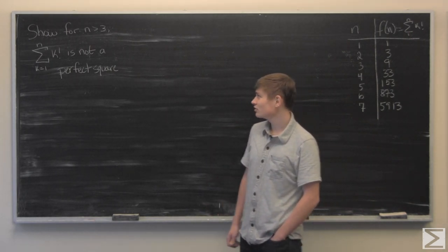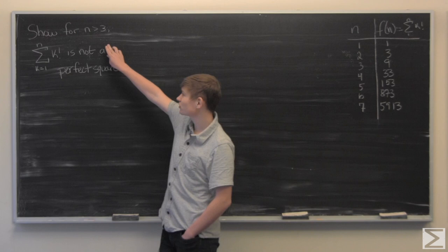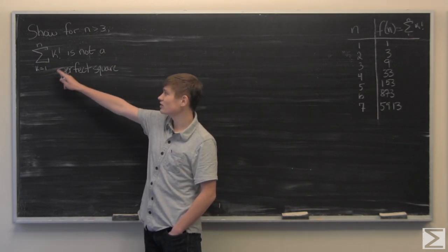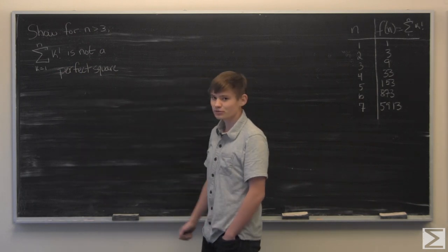This week's problem was to show that for n greater than 3 the sum from 1 to n of the factorial function is not a perfect square.